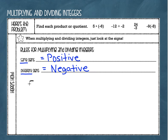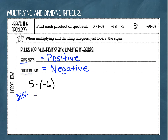Our first problem is positive 5 times negative 6. The first thing I'm going to do is look at these two integers and look at their signs, and ask myself: are they the same or are they different? I see one positive integer and one negative integer, so my signs are different. That means my answer is going to be negative. I'll put a little negative sign there, then just do the math — 5 times 6 is 30. So once you put the sign in, just do the multiplication or division.